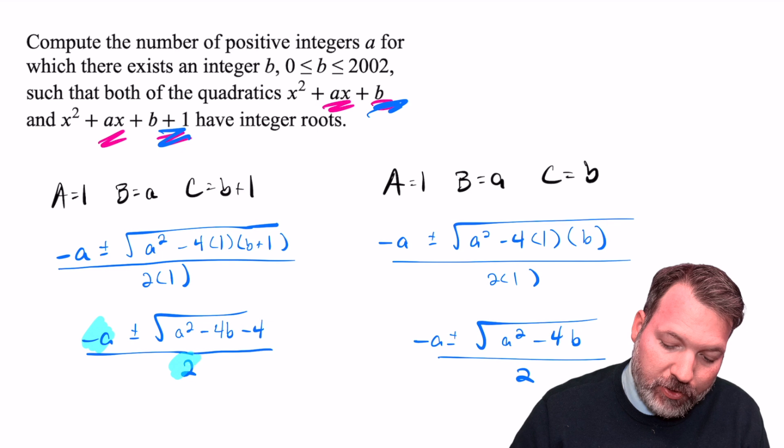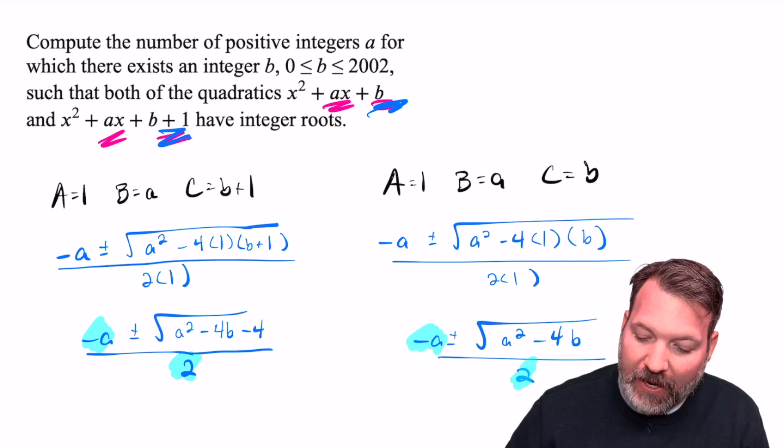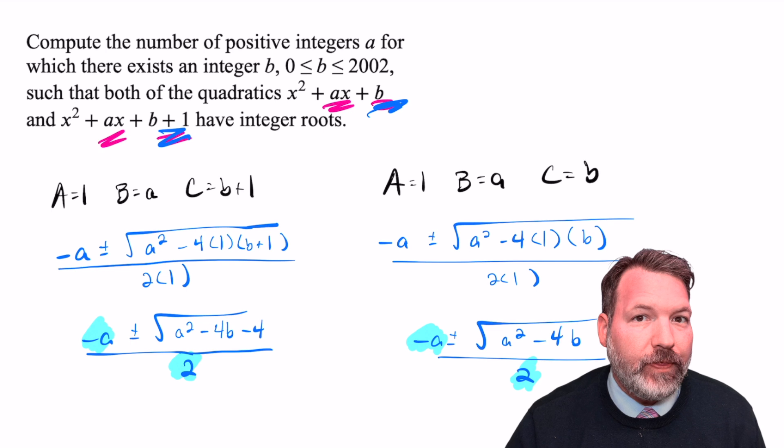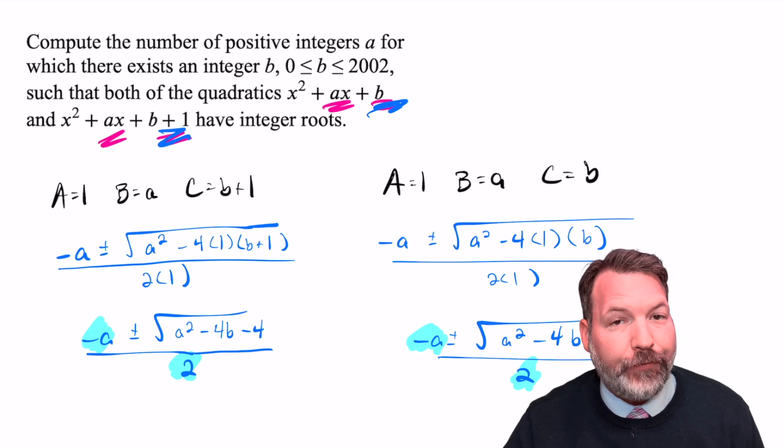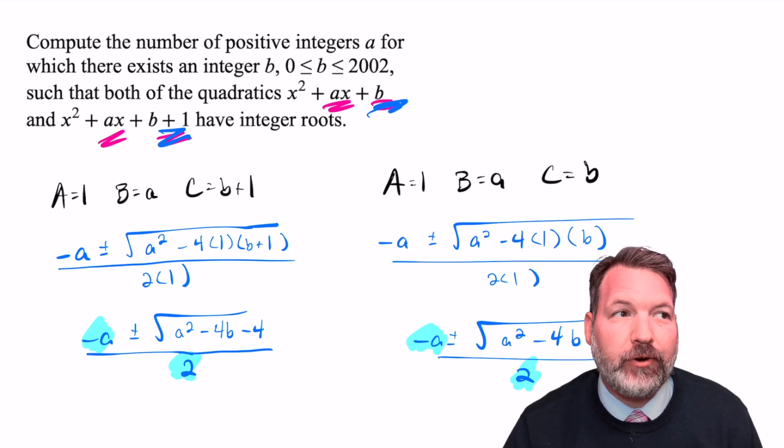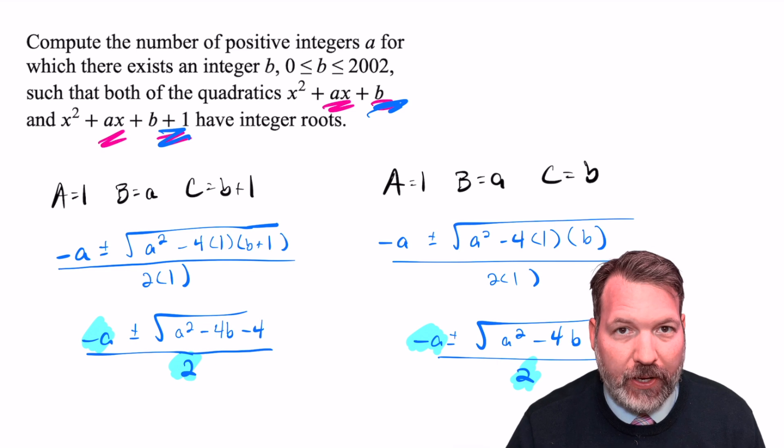In both cases, for these results to be an integer, A is going to have to be divisible by 2. Furthermore though, and this is the key to recognizing that the 44 possible solutions we found are in fact the only 44 possible solutions, for these two sets of roots to represent integers, whatever's under the square root sign must be a perfect square.